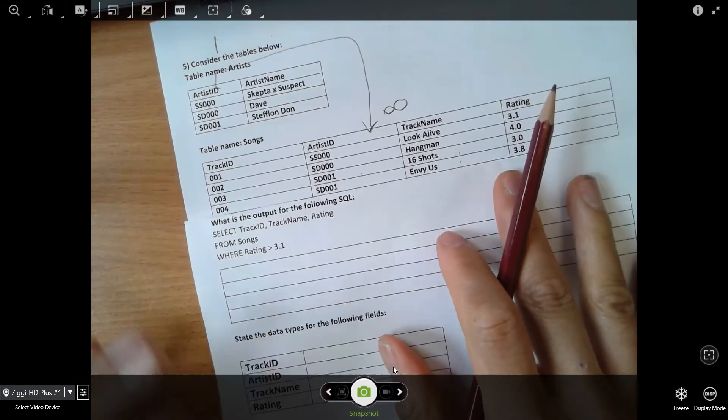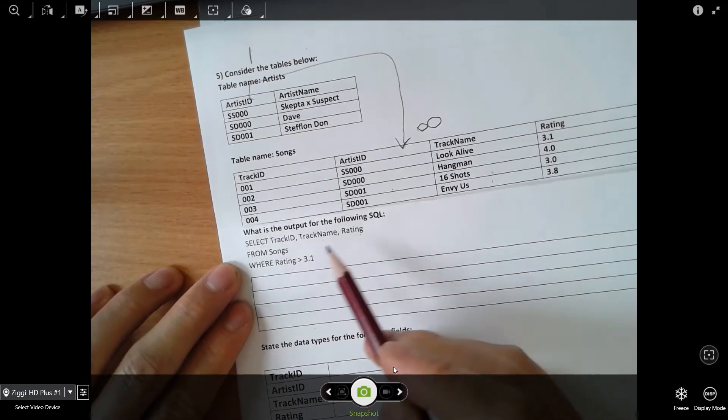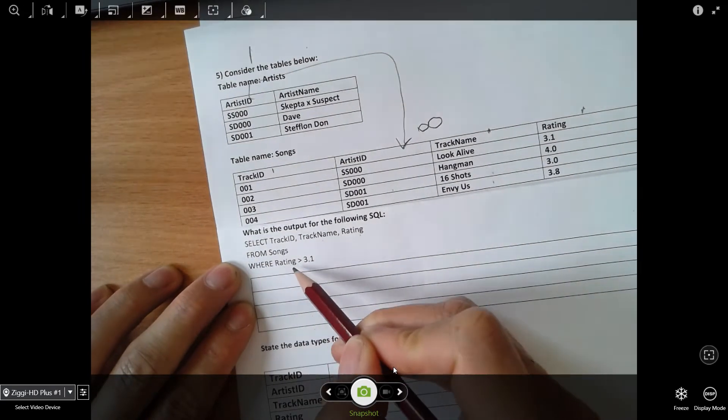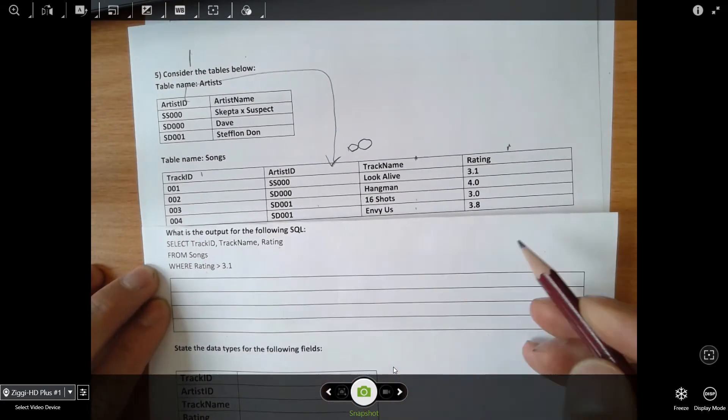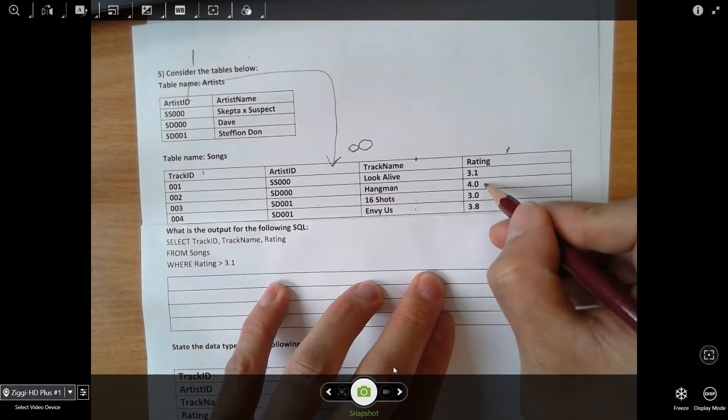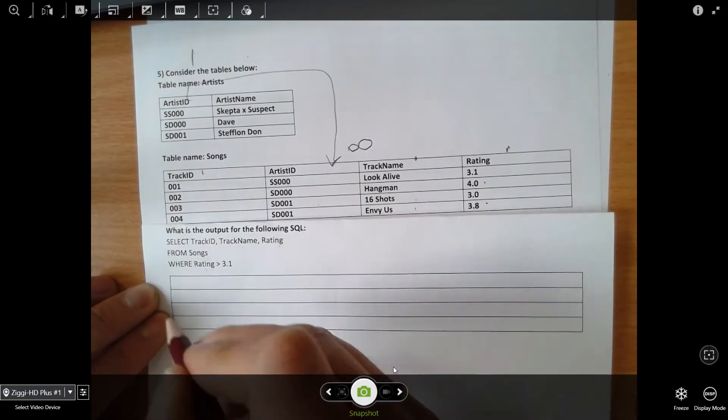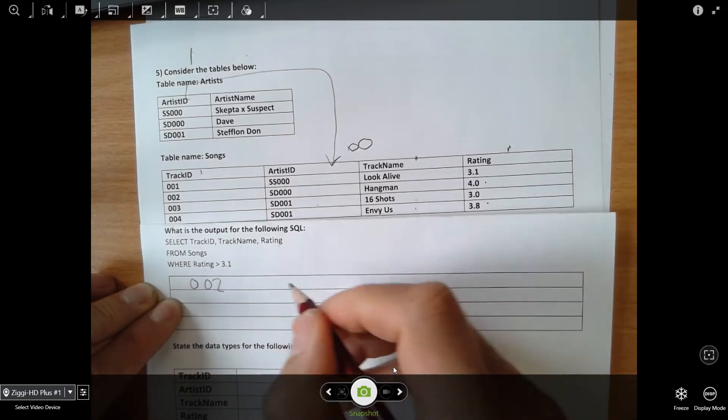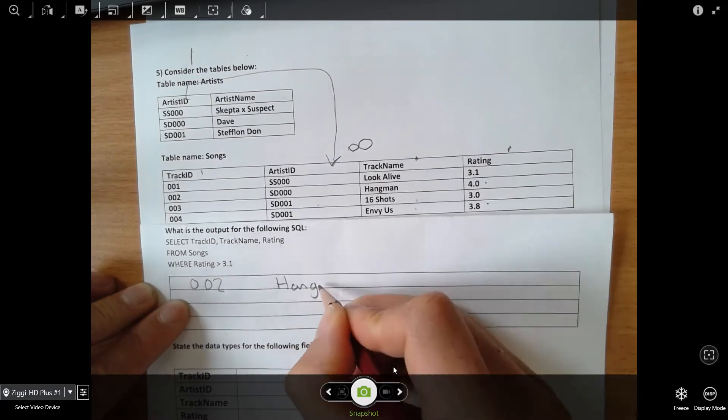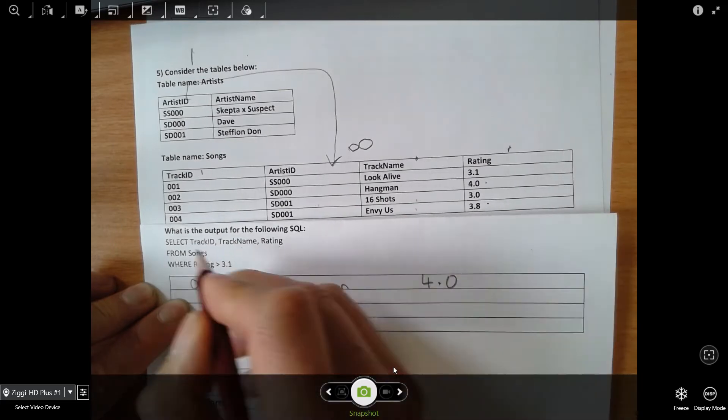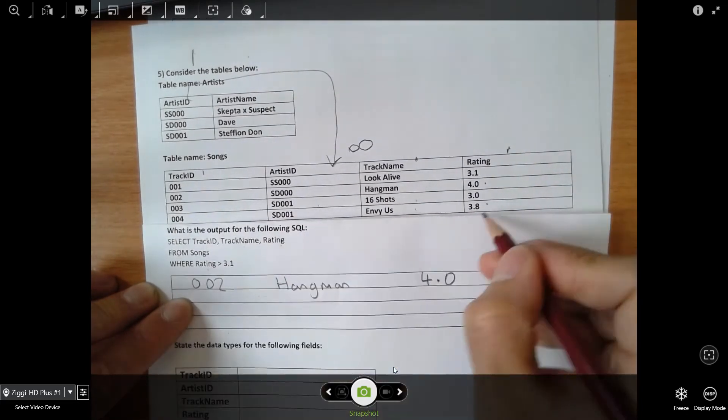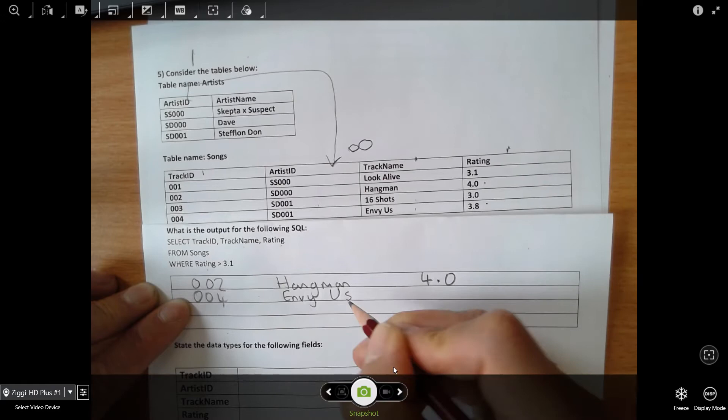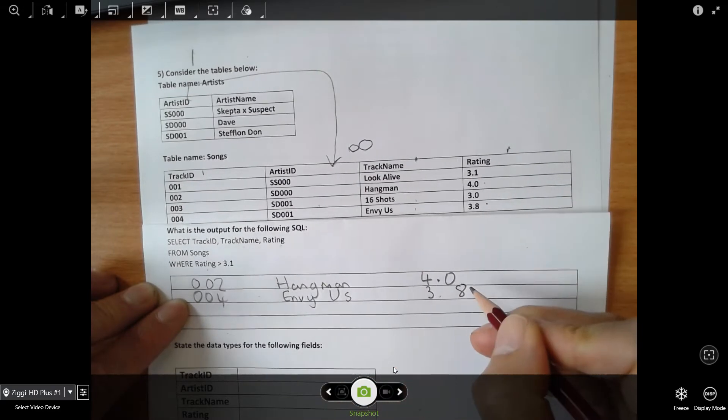What is the output for the following SQL? Select track ID, track name and rating from songs where the rating is greater than 3.1. I need this song and this song. I'm outputting the track ID first, so 002, track name Hangman, rating 4.0. Then I'm outputting this as well - 004, Envy Us, 3.8.